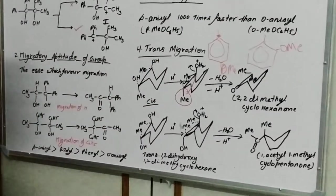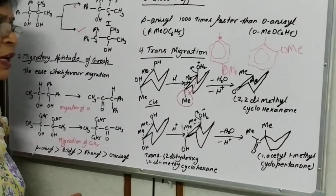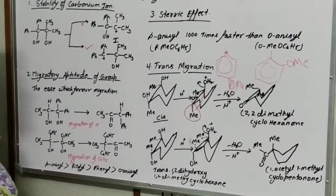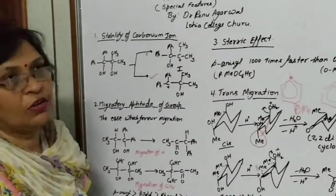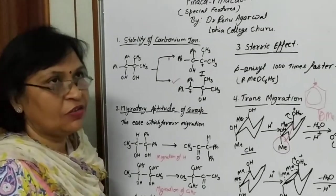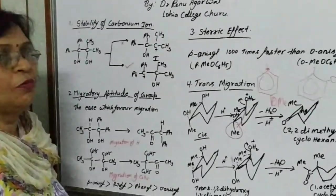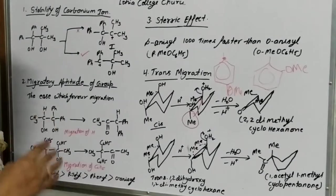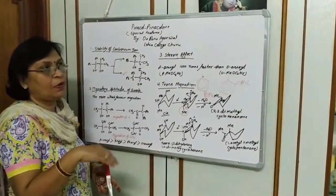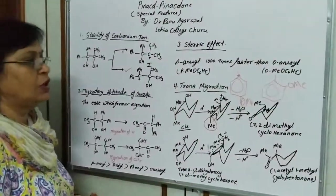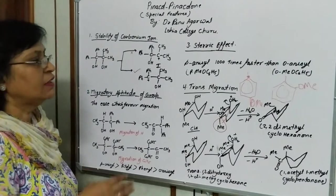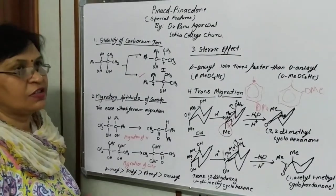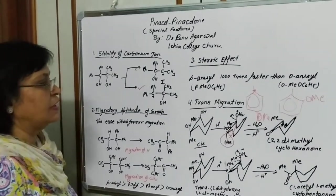The fifth special feature is intramolecular migration, which we have already studied. In intramolecular migration, the migratory group never leaves the proximity of the molecule. Therefore, that one is known as intramolecular, which we have studied previously.